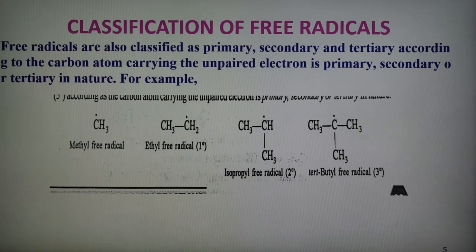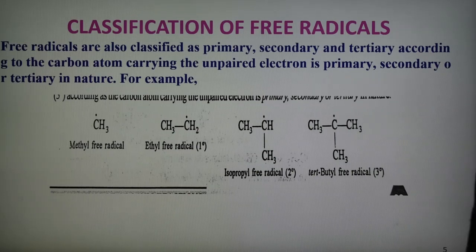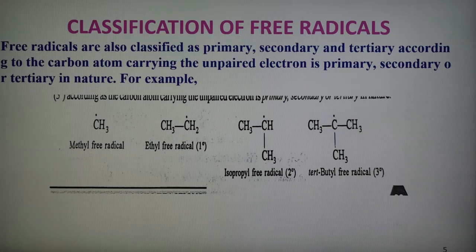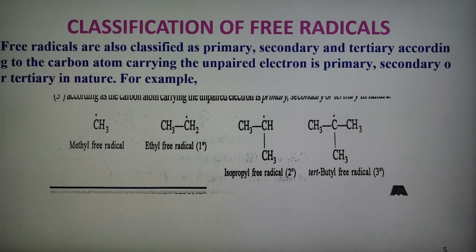Free Radicals are again of the type primary, secondary, or tertiary. Free Radicals are classified into primary, secondary, or tertiary depending upon the carbon atom carrying the unpaired electron. So this is the Methyl free radical, this is the Ethyl free radical — which is primary — this is the Isopropyl free radical — secondary — and this is the Tertiary Butyl free radical.